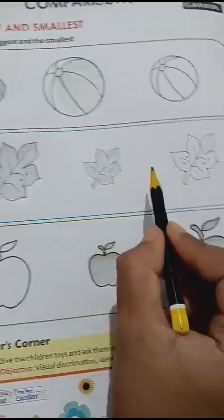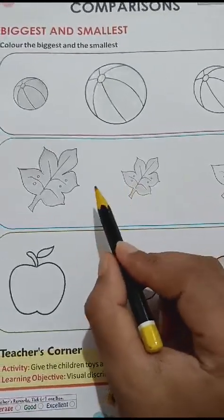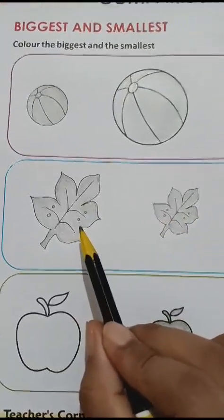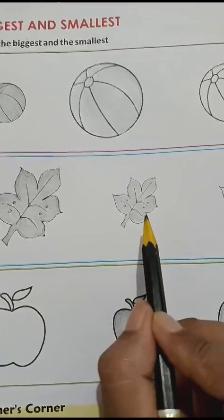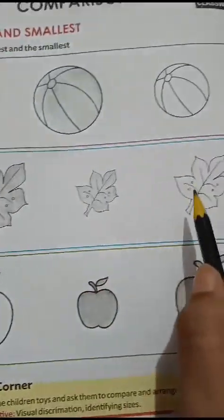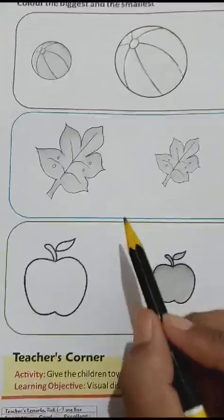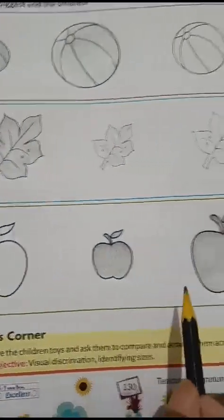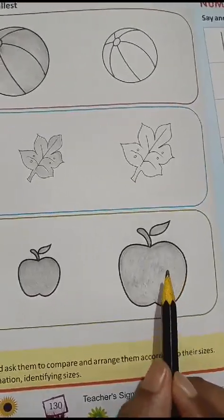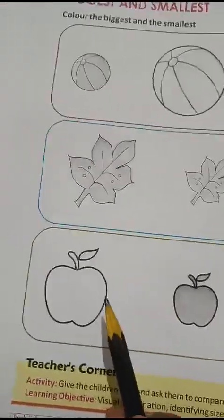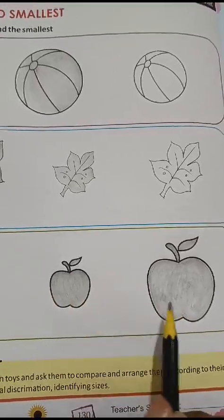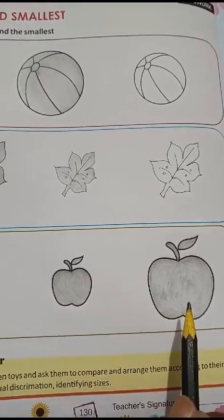This is the biggest, which is the biggest one, and this is the smallest one. Then we will do the pencil sheet. Okay?